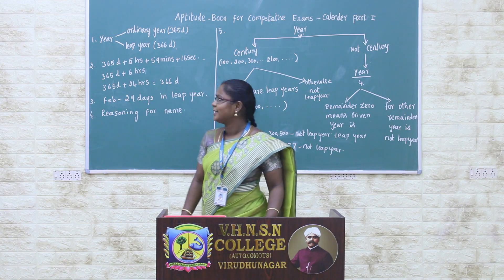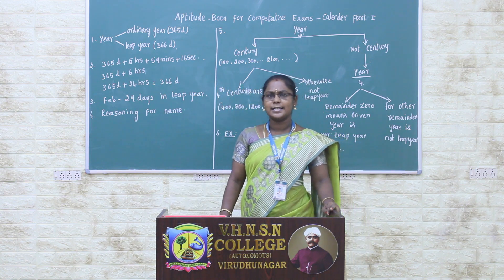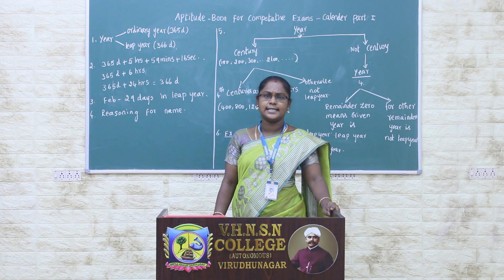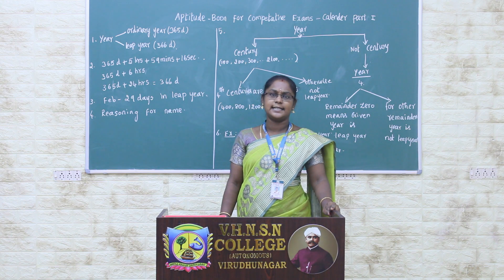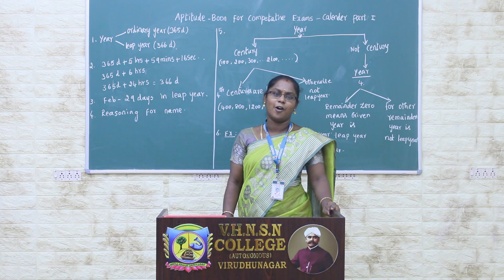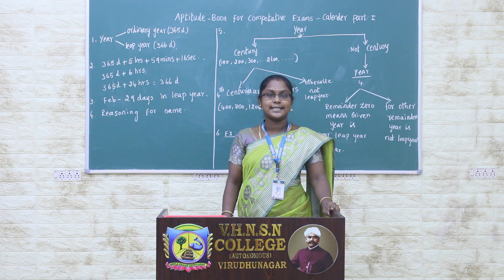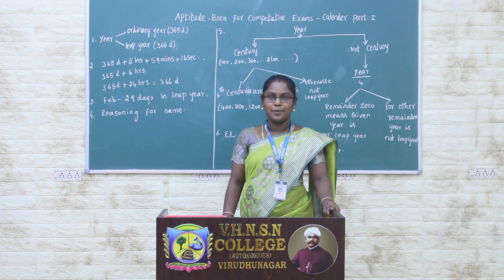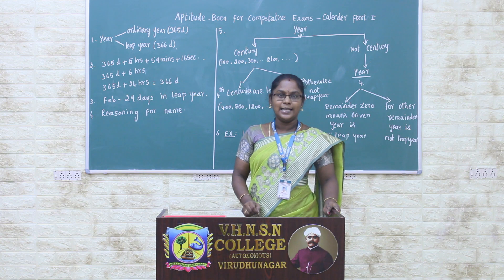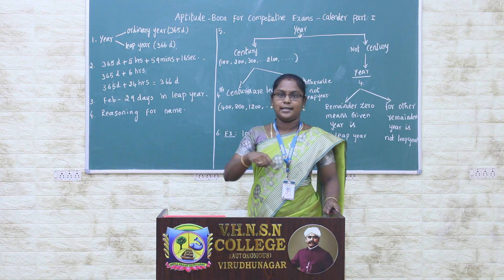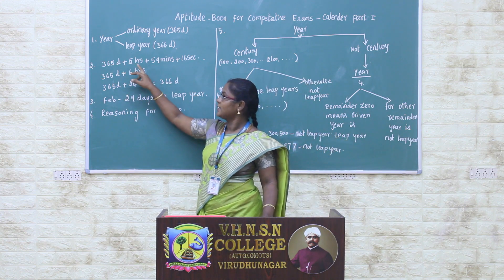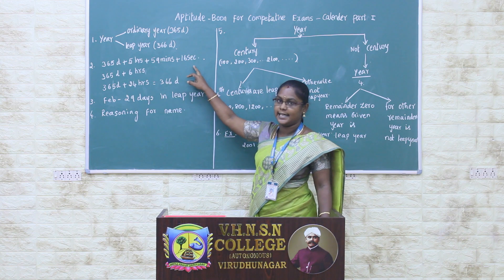We all know that there are two types of year. The first one is ordinary year and the second one is leap year. An ordinary year has 365 days and a leap year has 366 days. Now, why do we have 365 days in a normal year and 366 days in a leap year? The answer is very simple. Actually, the number of days in the ordinary year is the time taken by Earth to go around the sun, which is 365 days, 5 hours, 59 minutes and 16 seconds.